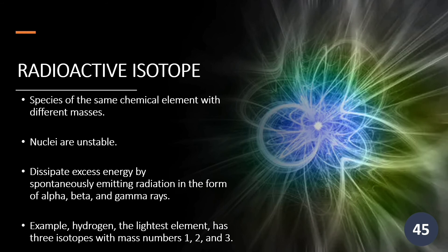Next we discuss radioactive isotopes. Radioactive isotopes or radioisotopes are species of the same chemical element with different masses whose nuclei are unstable, dissipating excess energy by spontaneously emitting radiation in the form of alpha, beta, and gamma rays. For example, hydrogen has three isotopes; its third isotope, tritium, is a radioactive isotope.